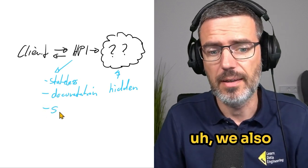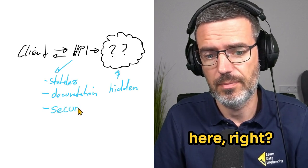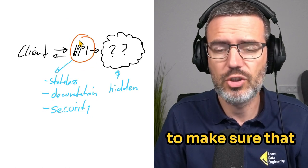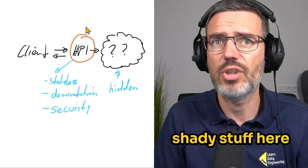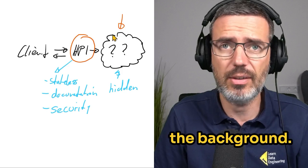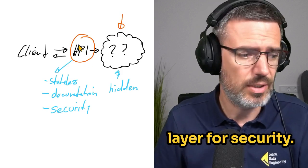Then, of course, we also have security here. This is the API layer. This is the layer to make sure that nobody is doing shady stuff here with your actual function that is laying here in the background. So it's a layer for security.